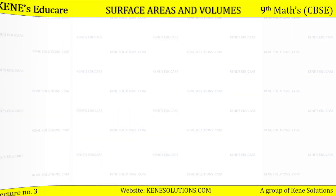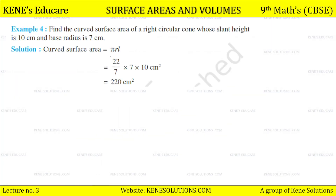Example 4: Find the curved surface area of a right circular cone whose slant height is 10 cm and base radius is 7 cm. Just put the values into the formula πRL: π = 22/7, R = 7, L = 10. The 7s cancel, so 22 × 10 = 220 cm².